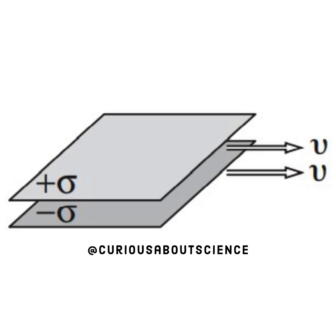Alright, let's look at the diagram. We have two plates running parallel, and we see that they're moving to the right with speed v with a plus or minus sigma.